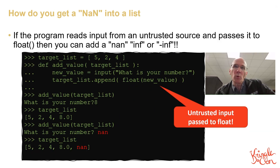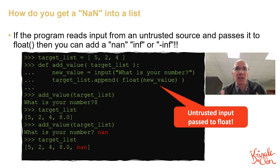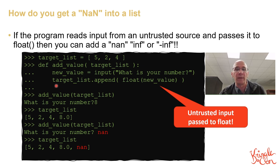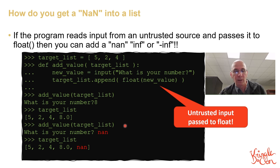The question becomes: how does one get NAN, infinity, or negative infinity into a list? The answer is: if a program accepts untrusted input and passes it to the float() function, it's trivial. Here I have a function called add_values that calls input(), accepts any string, stores it in new_value, passes it to float(), and appends the result to the list. If I type in '8', the number 8 is added as a float. But if I enter the string 'nan', then a NAN is added to the list, which can then be used to break sort functions.